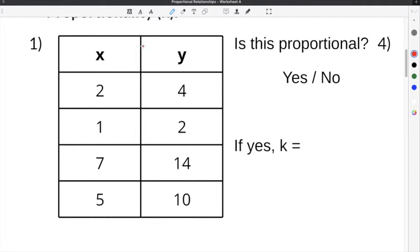In order to determine if this is proportional, we have to figure out if we are multiplying by the same amount to go from the x column to the y column. So to go from 2 to 4, we're going to multiply 2 times 2 is 4. To go from 1 to 2, we're going to multiply 1 times 2 is 2. To go from 7 to 14, again it's times 2. And then to go from 5 to 10, again we're multiplying times 2. So because we are using the same constant of proportionality of multiplying times 2, we know that this is proportional. Our constant of proportionality is going to be 2.